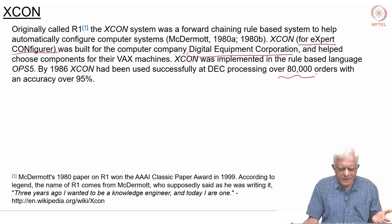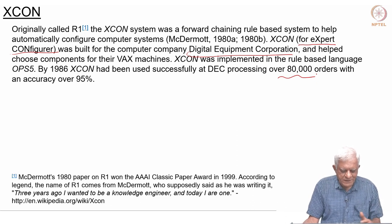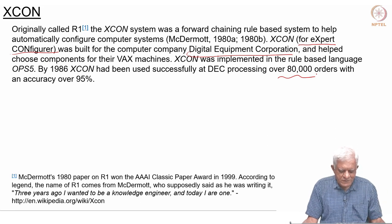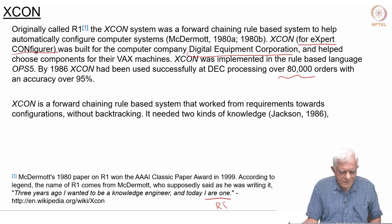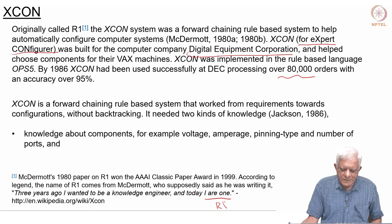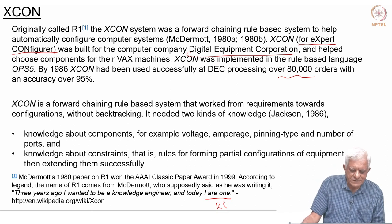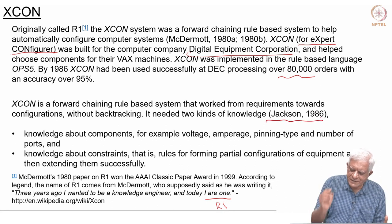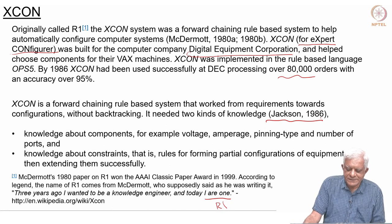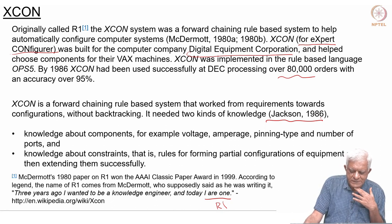There is a small anecdote about why it was called R1 — apparently McDermott said 'three years ago I wanted to be an orders engineer, and today I R1.' It was a forward-chaining rule-based system that worked from requirements towards configurations without backtracking. There is a nice book on expert systems by Peter Jackson, written in 1986, where you can read more.